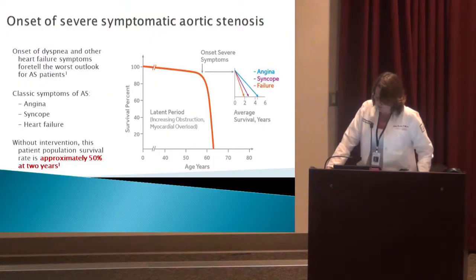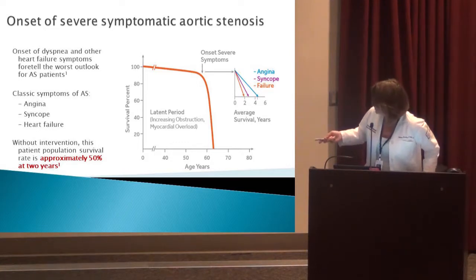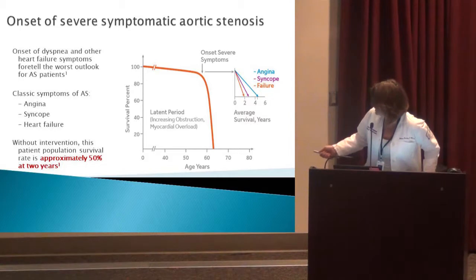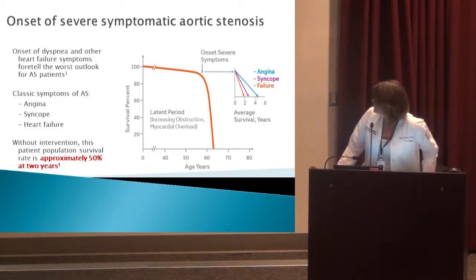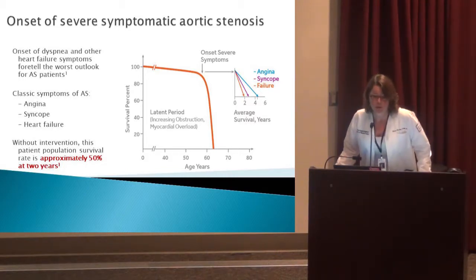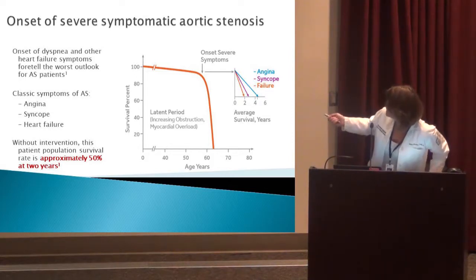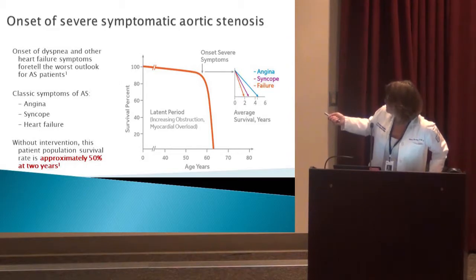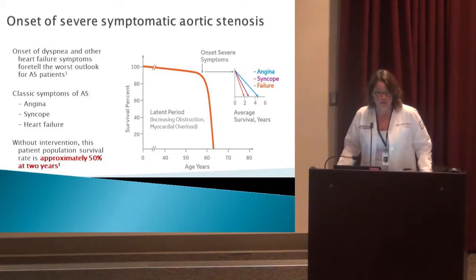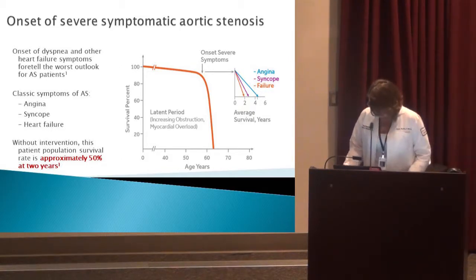Once symptoms occur with severe symptomatic aortic stenosis, 50% of patients die within two years if they don't receive treatment. Heart failure carries the worst prognosis. Angina gives you a little more time, and syncope falls in between. But once a patient starts to develop heart failure, you have to get them treated right away.